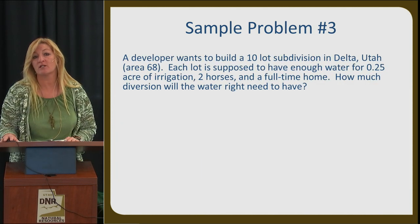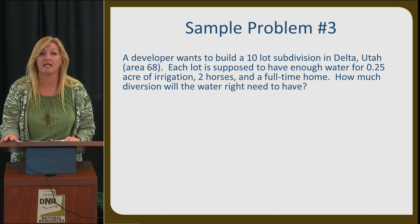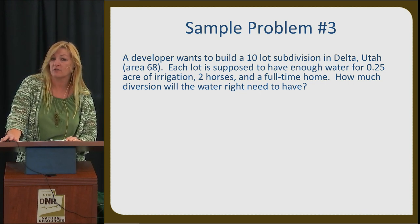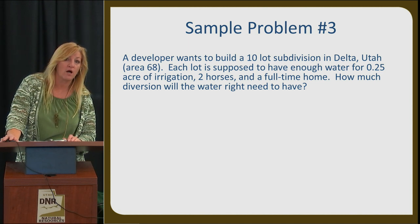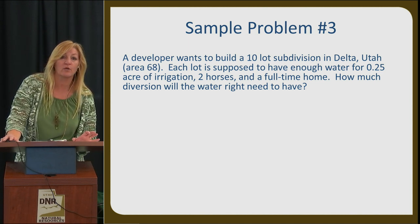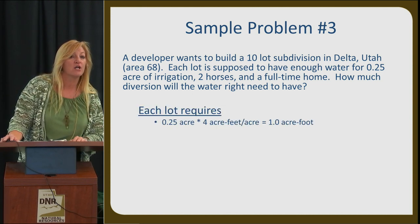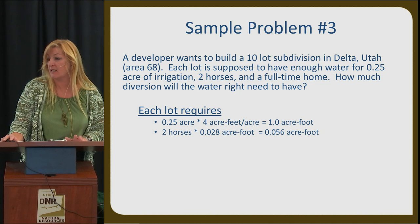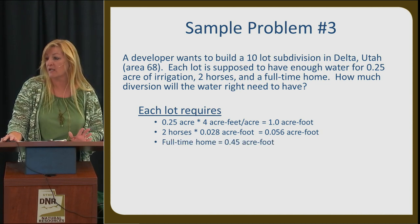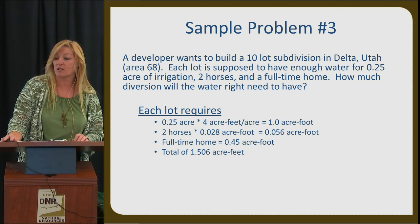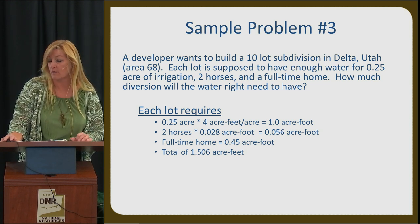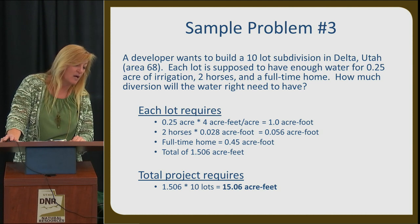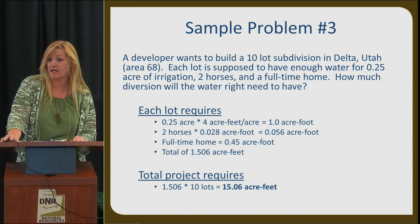Sample problem three: a developer wants to build a 10-lot subdivision in Delta, Utah, which is Area 68. Each lot is to have water for a quarter acre of irrigation, two head of livestock, and a full-time home. Per lot: quarter-acre irrigation times four equals one acre-foot; two horses times 0.028 equals 0.056 acre-feet; full-time home equals 0.45 acre-feet. Each lot needs 1.506 acre-feet. Multiplied by 10 lots, the application will need 15.06 acre-feet total.